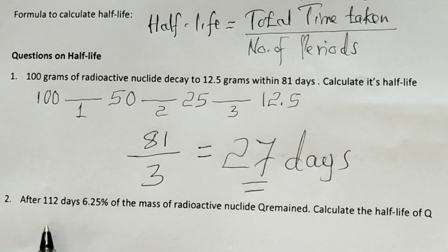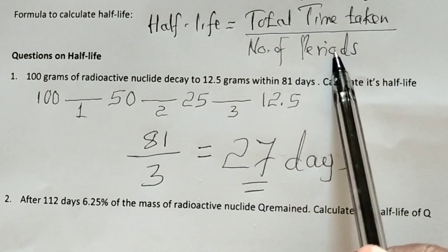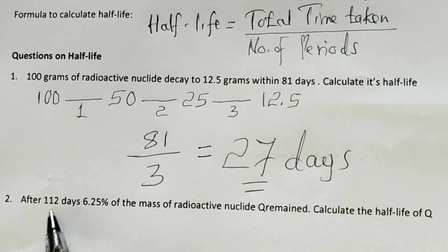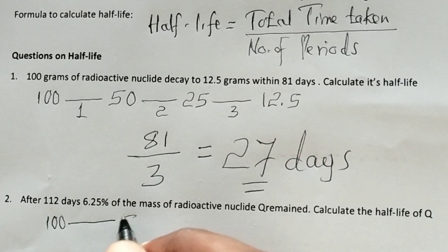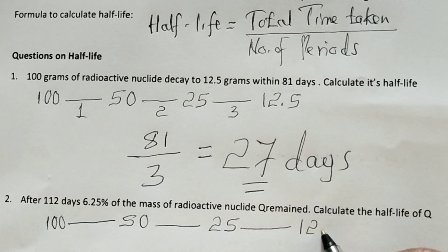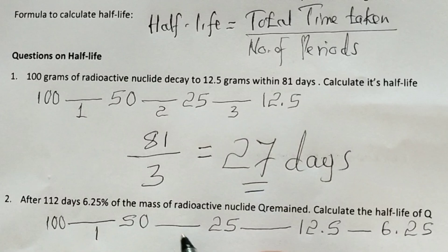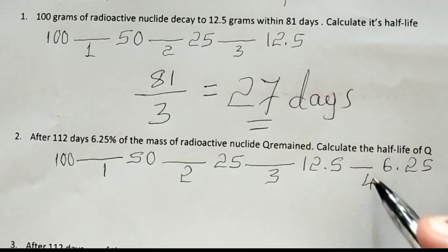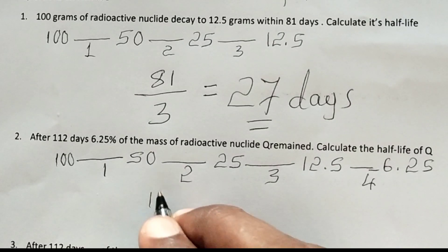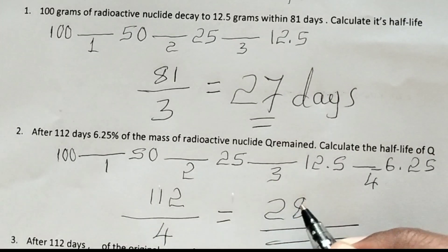Question 2: After 112 days, 6.25% of the mass of radioactive nuclide Q remains. Calculate its half-life. Total time taken is given as 112 days. For number of periods: starting from 100%, we get 50%, then 25%, then 12.5%, then 6.25% — that gives 4 periods. Half-life equals 112 days divided by 4, therefore the half-life is 28 days.